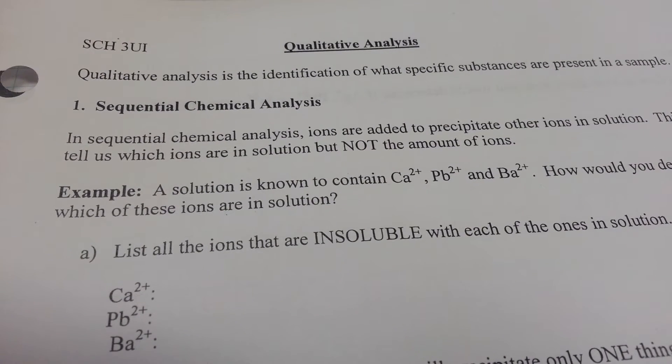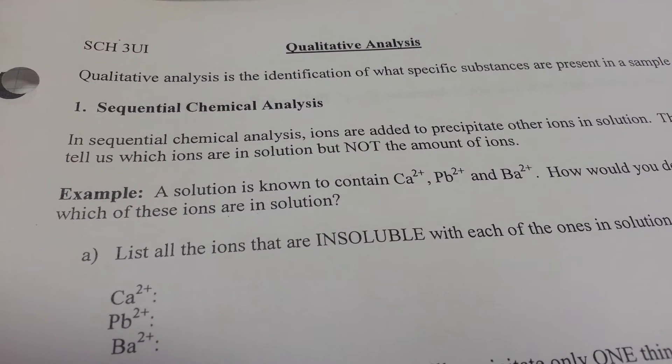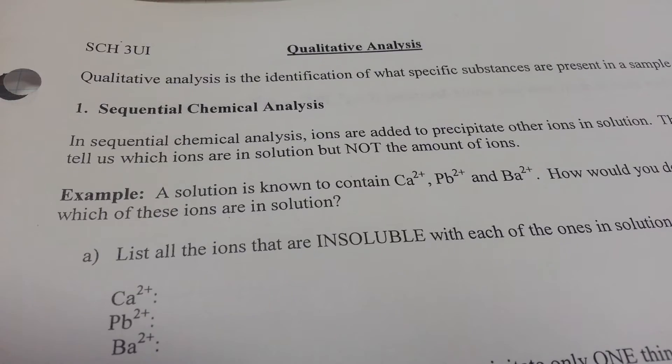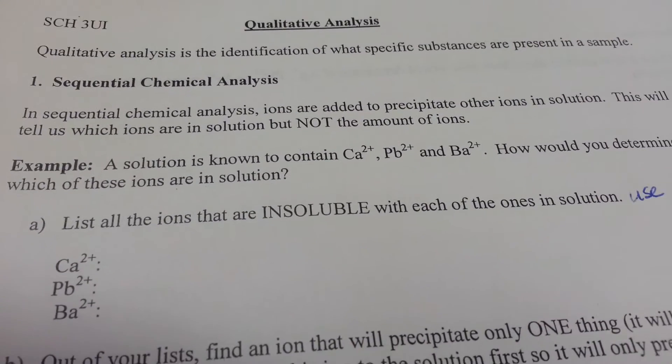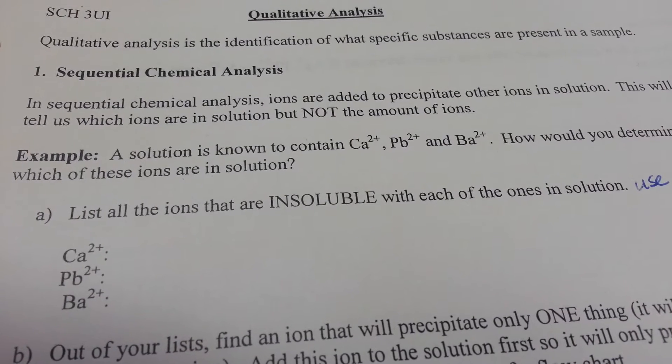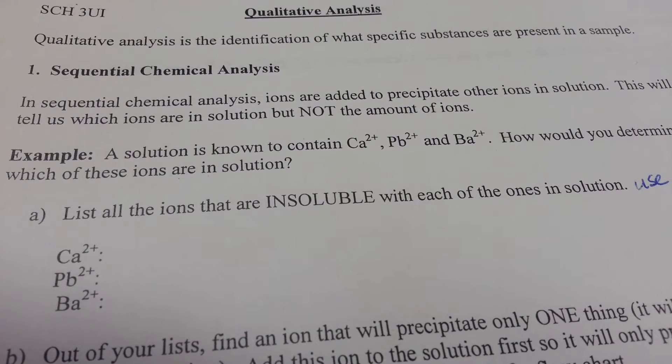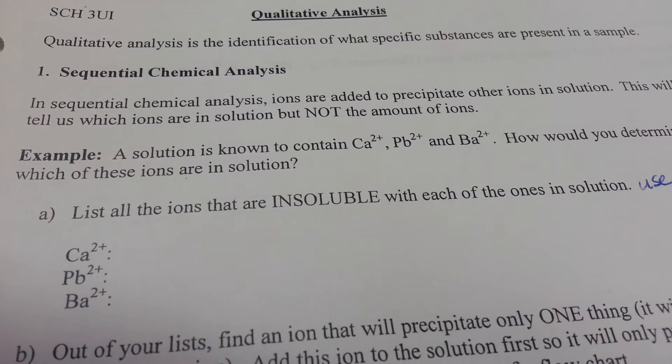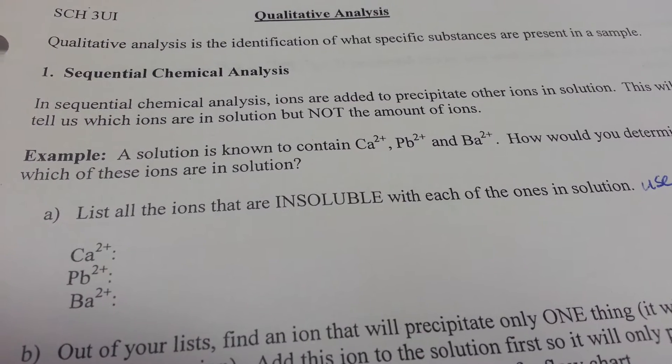Sequential is implying that there's a specific sequence to the order in which we do our chemical analysis. In the first example, we are trying to use precipitate reactions to create a precipitation reaction to identify whether or not calcium, lead, or barium is going to be present.